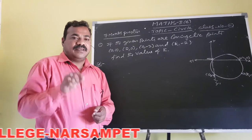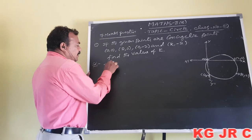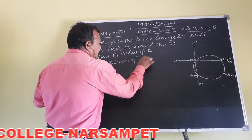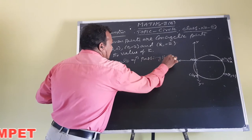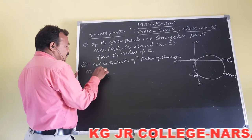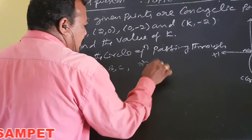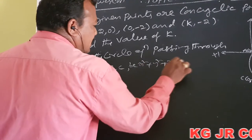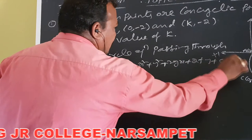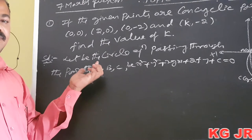Concyclic points means the points lie on the same circle. First, we have to find out the circle equation passing through the first three points. Let the circle equation in general form be: x² + y² + 2gx + 2fy + c = 0.